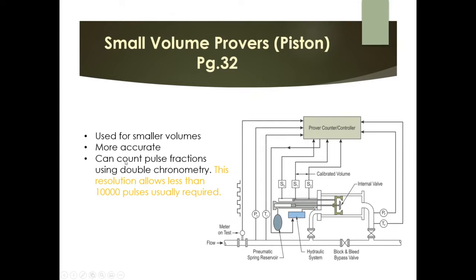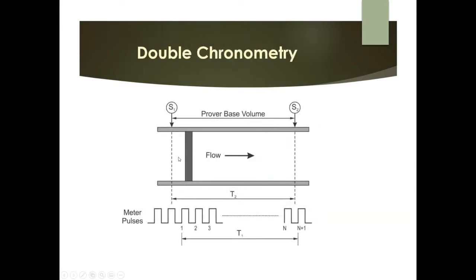Double chronometry works similarly to the bi-directional ball prover in that it has two sensors, allowing the counting of half strokes. This enables resolution below the usual 10,000-pulse minimum. Each sensor generates a pulse with a small time difference between them, effectively allowing the system to count half pulses.